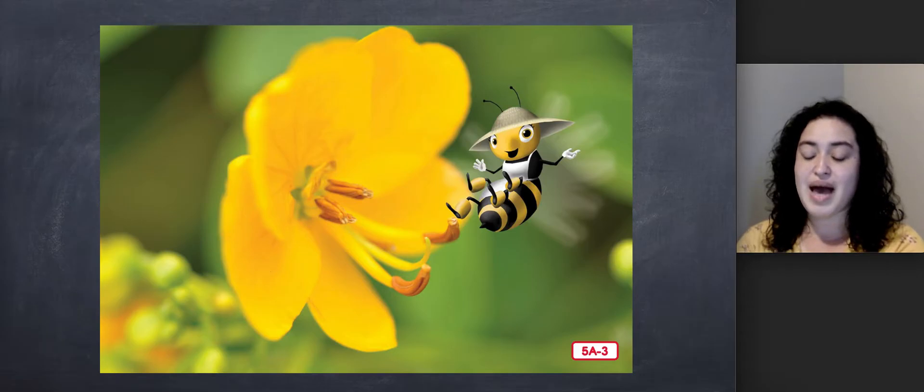When I get back to the hive, I turn the nectar and pollen over to the worker bees in the hive. They mix the pollen with a little bit of nectar and feed it to the baby bees. Then they fan the rest of the nectar with their wings until most of the water is gone.